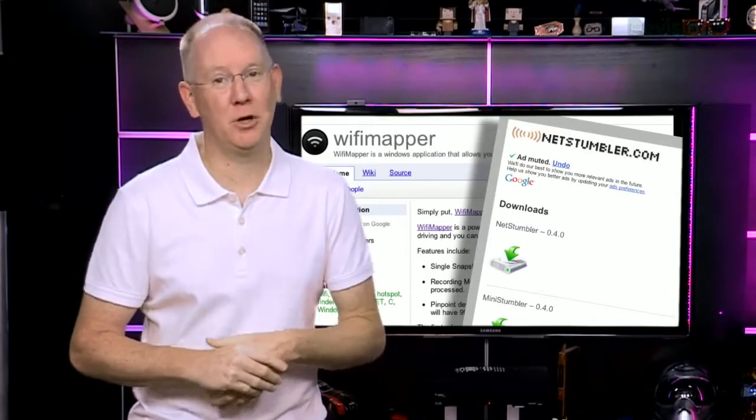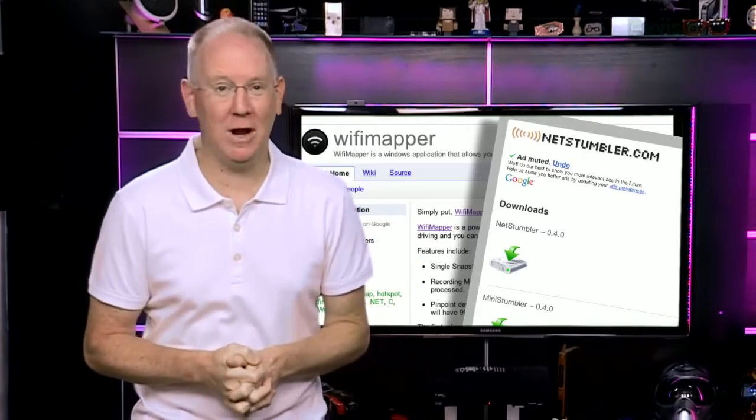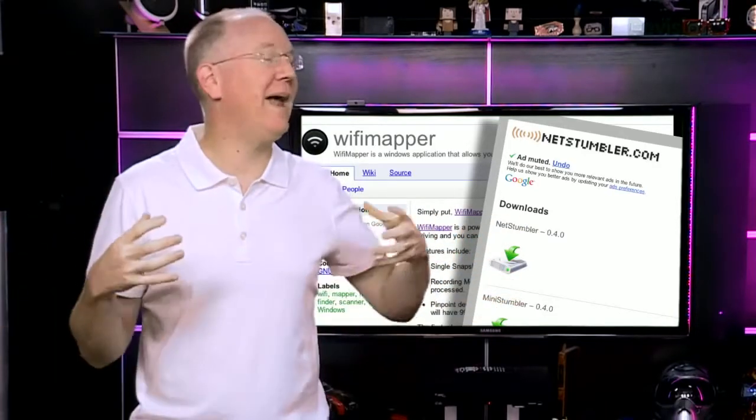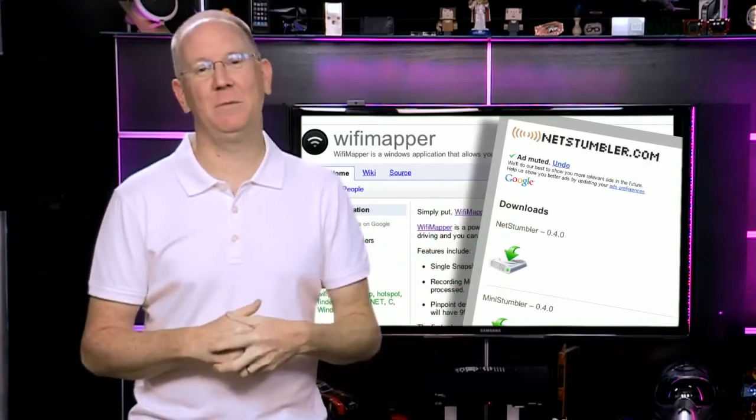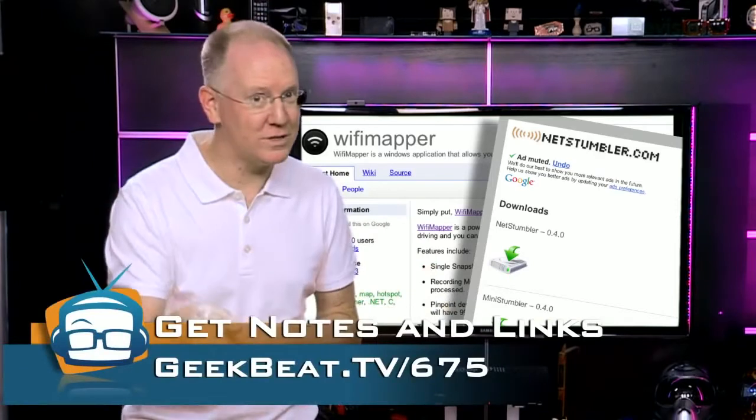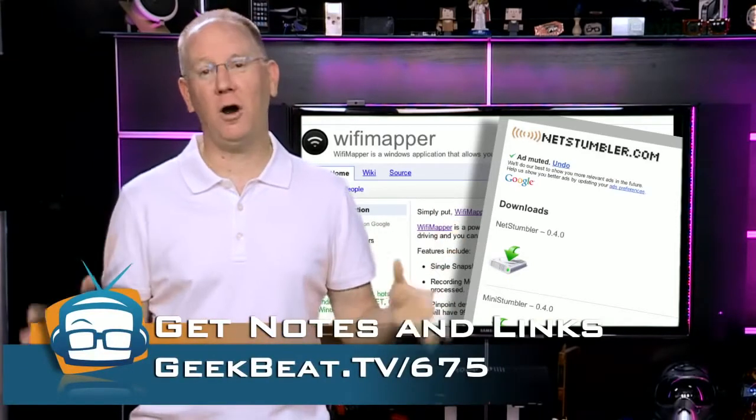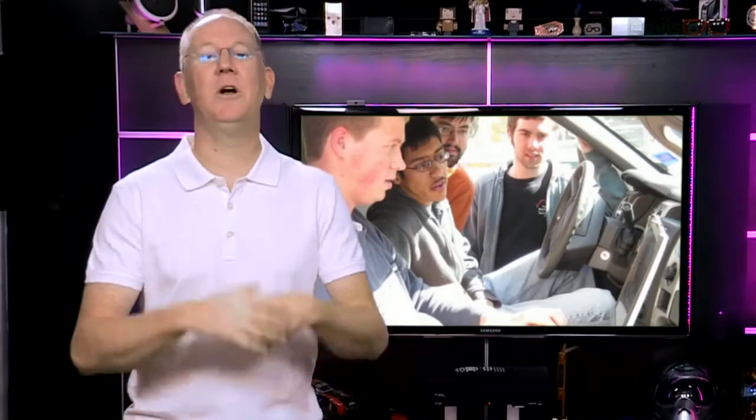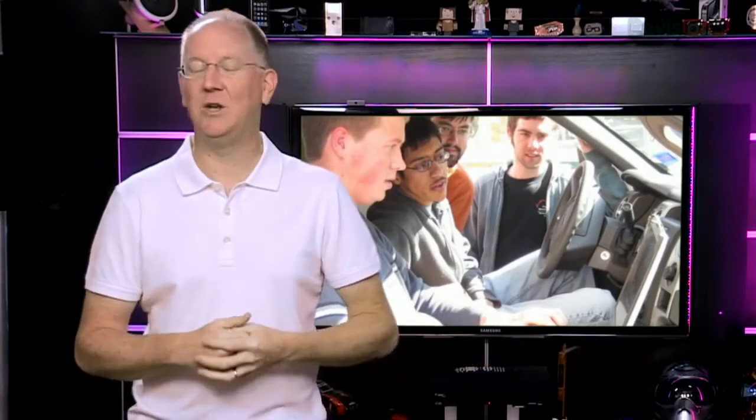I'm constantly running into people who have no idea what war driving is. We're talking about geeks who drive around looking for unsecured Wi-Fi access points and log them complete with GPS coordinates. Did you know you can download a free program for PCs from NetStumbler.com or use Wi-Fi Mapper and just drive around collecting information about every access point you pass? It's been available for years and links are in the show notes at geekbeat.tv/675. So if you aren't using security on your access point, I can guarantee you someone knows about it. And that means you're in a big database that the bad guys share with each other so they can hop on open networks and do nefarious things.